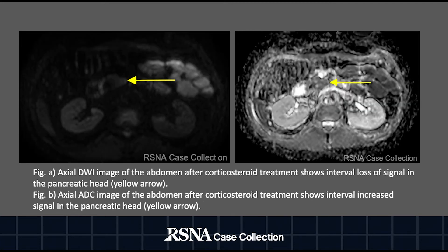Lastly, in figure A, an axial DWI image of the abdomen after corticosteroid treatment shows interval loss of signal in the pancreatic head. And in figure B, an axial ADC image of the abdomen after corticosteroid treatment shows interval increased signal in the pancreatic head, denoted by the yellow arrows.